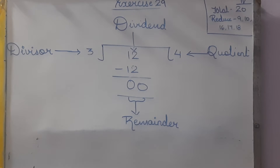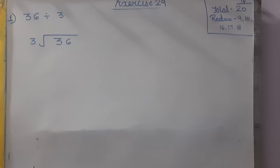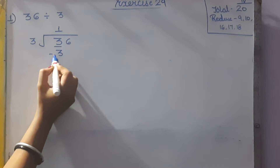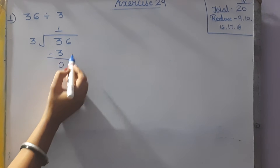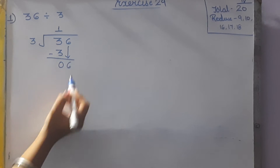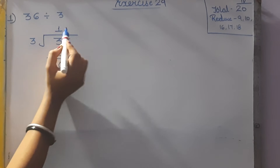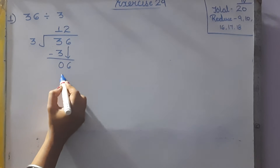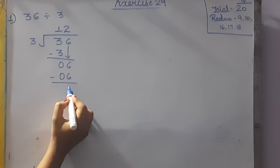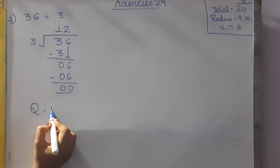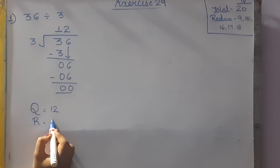Now, coming to the first question: 36 divided by 3. 3 ones are 3, and 3 minus 3 is 0. Bring down the 6. In the table of 3, how many times does 6 come? 3 twos are 6, so 6 minus 6 is 0. The quotient will be 12 and the remainder will be 0.